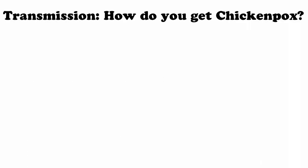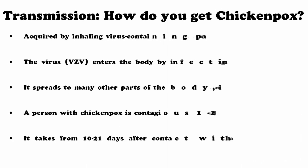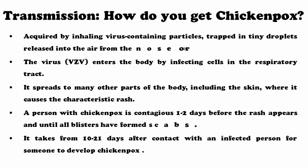Transmission is a very important part of chickenpox — how you can get it and how you can avoid it. It can occur by inhaling virus-containing particles trapped in tiny droplets released into the air from the nose or throat of an infected person. The virus enters the body by infecting cells in the respiratory tract and spreads to many other parts of the body including the skin, where it causes the characteristic rash. The person with chickenpox is contagious one to two days before the rash appears and until all blisters have formed scabs. It takes 10 to 21 days after contact with an infected person to develop chickenpox, making it a highly contagious disease.